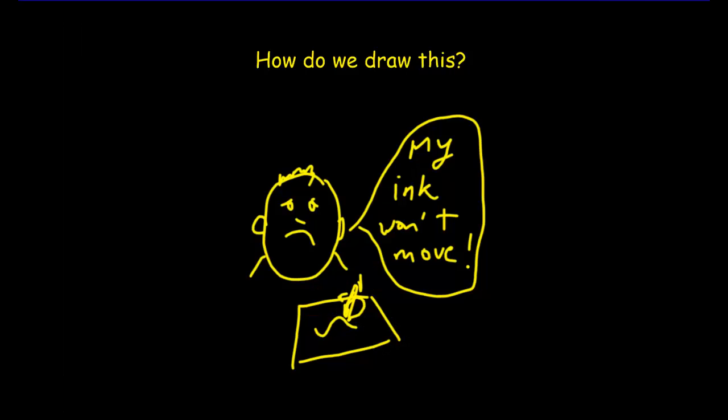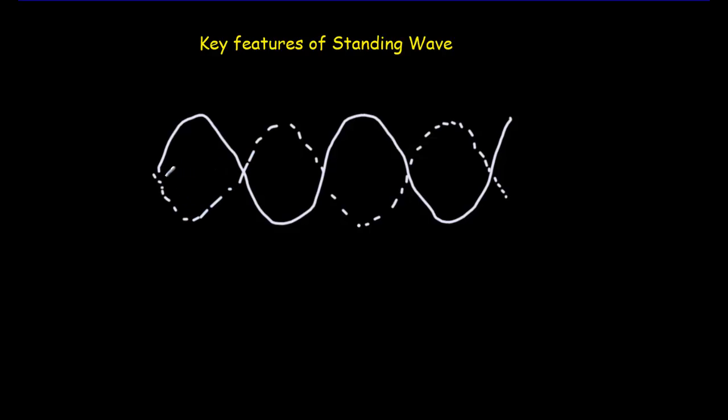How are we going to draw that pattern? We don't have moving ink. So how are we going to draw it on our paper? Well, this is the way we draw it. We just start out with a wave. And then we usually do a dotted wave that's opposite to that wave. And then these dots here are called the nodes. And these are called the anti-nodes.